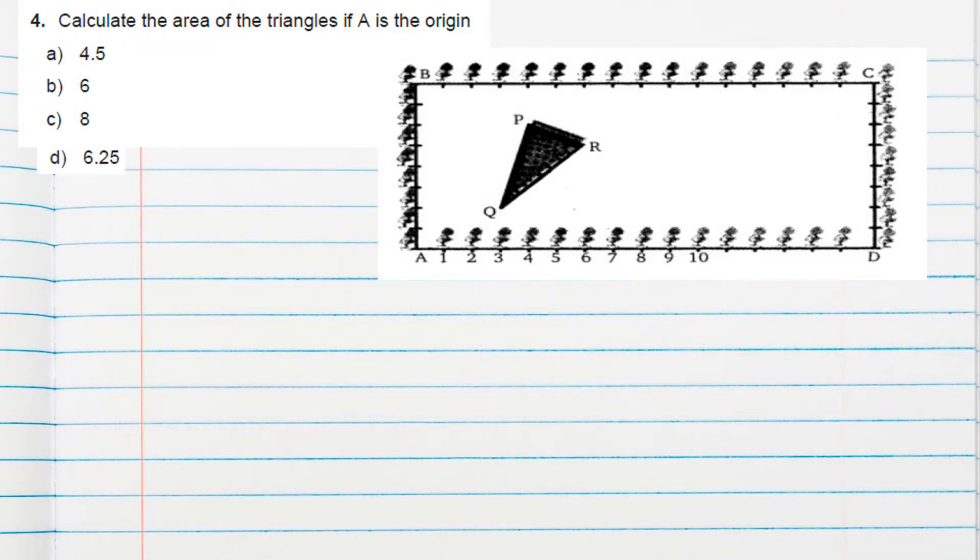Next question is calculate the area of the triangle if A is the origin. Now we need to find area of the triangle if A is the origin. So if A is the origin, we can find the coordinates of QPR. Right?